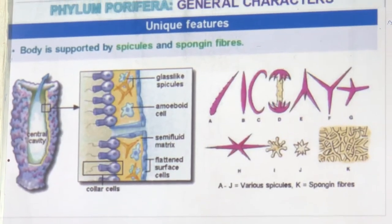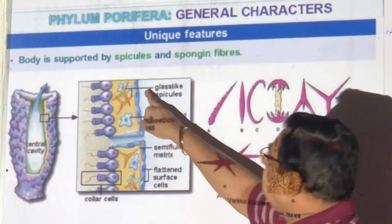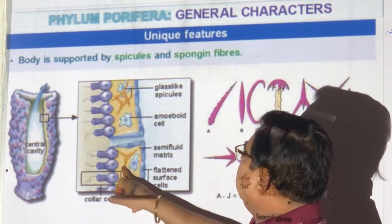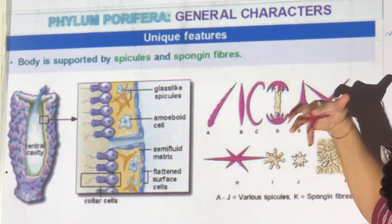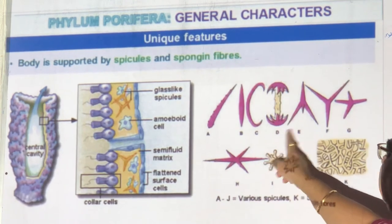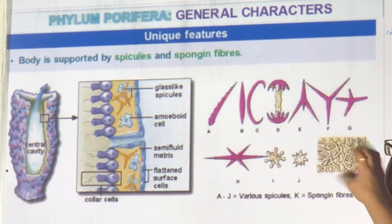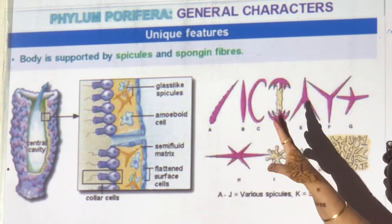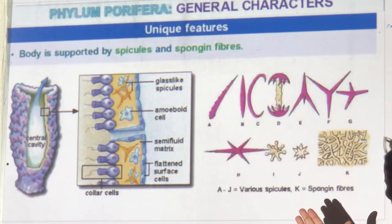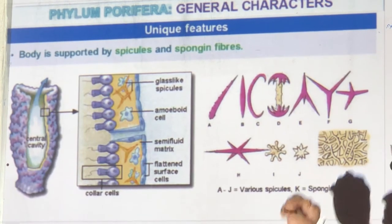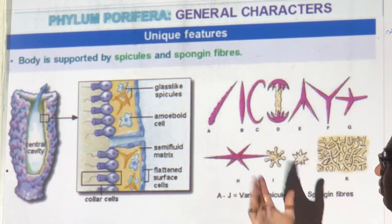The body is supported not by a skeletal system but by glass-like spicules — needle-like things made of silica that join together in different shapes. Protein fibers called spongin fiber come in between. The body forms loosely — like how you make a lantern at home: you take a bamboo frame, tie it, and stick paper on it.